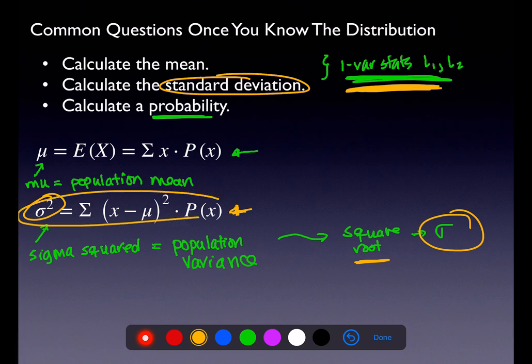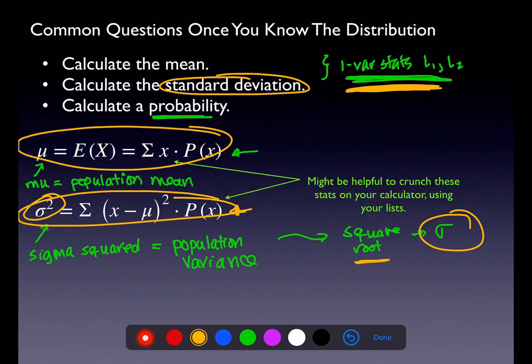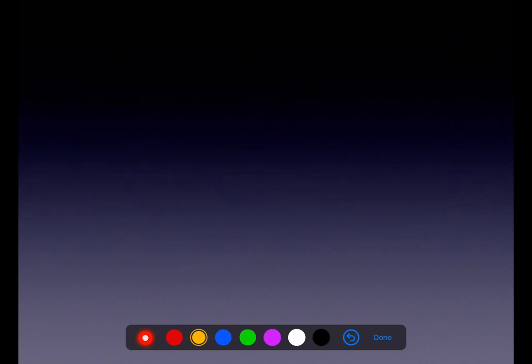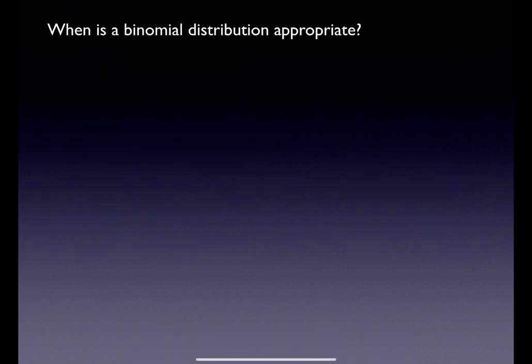At this point we have technology to get us past those two formulas. Back in the day those formulas had to be done by hand, but now we use technology for the number crunching. That covers the basic discrete random variable. I'd recommend crunching the numbers on your calculator using your lists. Now let's talk about the binomial distribution.